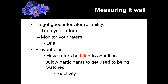Also, train your raters, and monitor them to look out for something called drift — checking whether they're staying consistent or diverging at some point. The last key point is to prevent bias, and this is very important. Inter-rater reliability will add noise to your experiment, but what can be even worse — turning that into a confound — is if raters are not blind to the conditions.